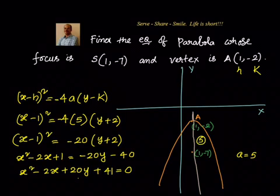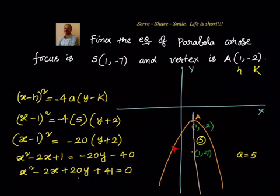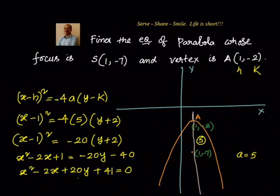So the equation of the parabola is x² - 2x + 20y + 41 = 0, for which the vertex is at (1, -2) and the focus is at (1, -7). To recap: knowing the vertex is (1, -2) and focus is (1, -7), we immediately know the parabola opens downwards because the focus lies inside the parabola below the vertex. This gives a = 5, h = 1, k = -2. Substituting into (x - 1)² = -4(5)(y + 2) and simplifying yields x² - 2x + 20y + 41 = 0.